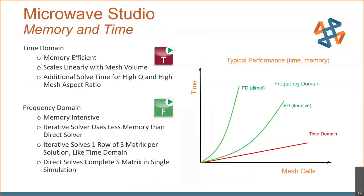This graph shows the relationship of electrical volume (mesh size) to typical solve time in both time domain and frequency domain. The key takeaway is that time domain is more efficient in memory usage and can be quicker for larger solve volumes.